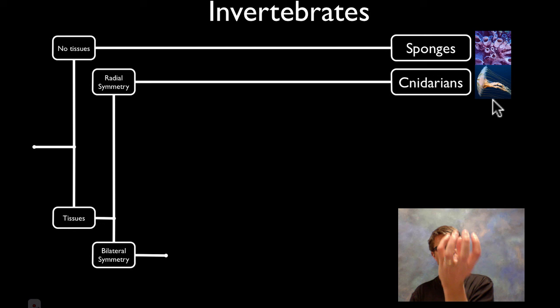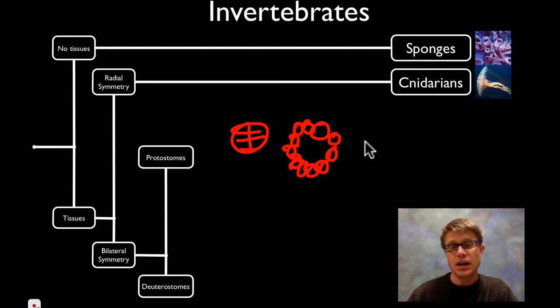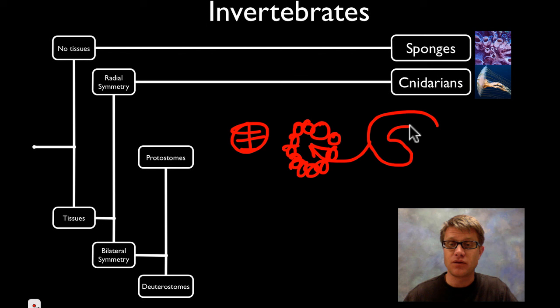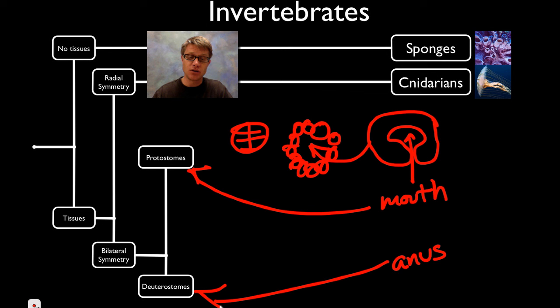The next way we group them is whether they're protostomes or deuterostomes — basically how life forms. You have a zygote undergoing cleavage that eventually forms a blastula, a sphere of cells. That blastula folds in on one side to form a gastrula — that's called gastrulation. That initial hole can form a mouth, making you a protostome, or it could form an anus, making you a deuterostome. Sadly, we are deuterostomes — that means this hole formed an anus.